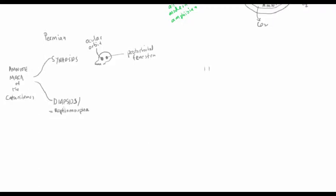In the synapsids there's one post-orbital fenestra. In the diapsids there are two — one in the temporal area and one in the supratemporal area. That's why we call them diapsids. Like an apse at the back of a church, we've got two little holes in the back of the skull of our reptilomorph or diapsid group. From the fossil record we can see these two lineages developing clearly starting with the Permian.